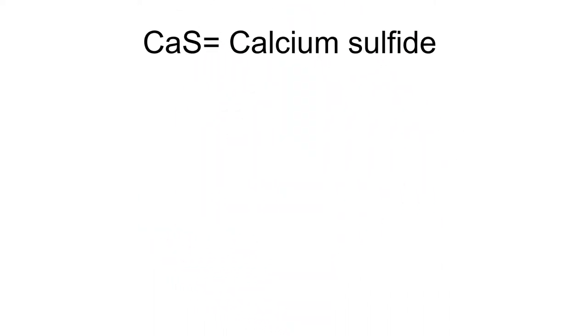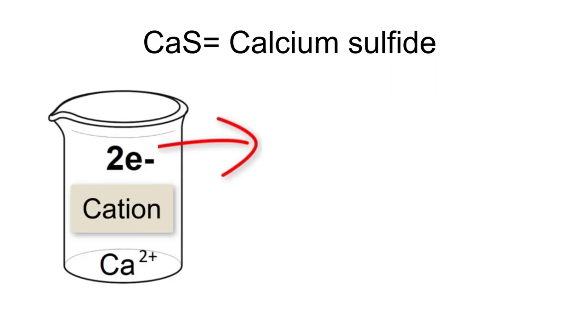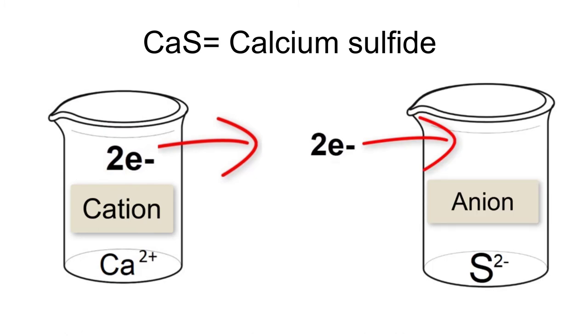For this, you should have gotten calcium sulfide. Calcium is our cation since it is written first, and sulfide is our anion since it is written second.